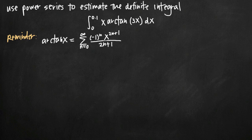Today we're going to be talking about how to use power series to estimate a definite integral. In this particular problem we've been given the definite integral on the interval 0 to 0.1 of the function x times arctan of 3x.